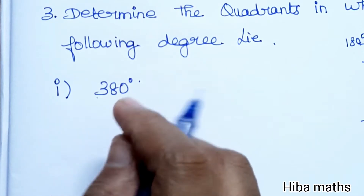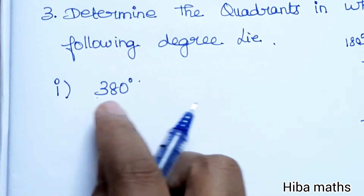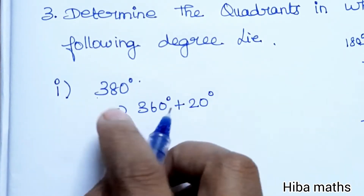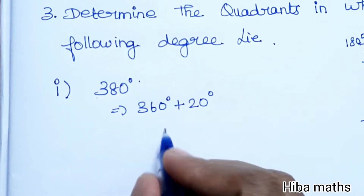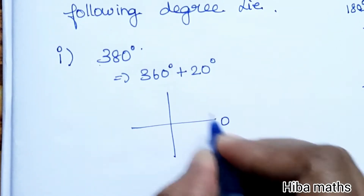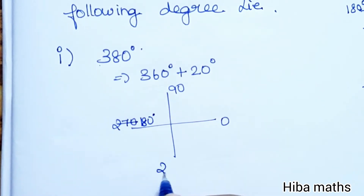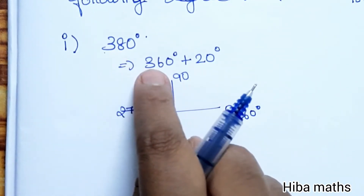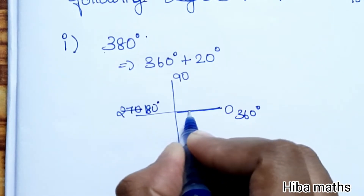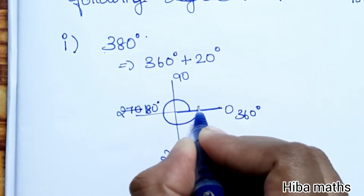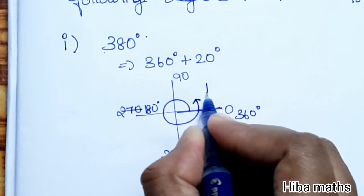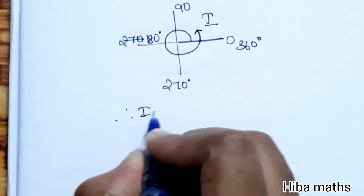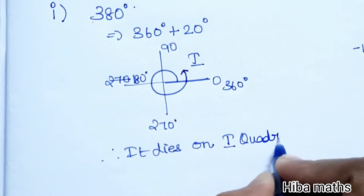Now the first question: 380 degrees. If we understand one thing — a full circle is 360 degrees. So 360 degrees plus 20 degrees gives us 380 degrees. Therefore, 380 degrees lies in the first quadrant.